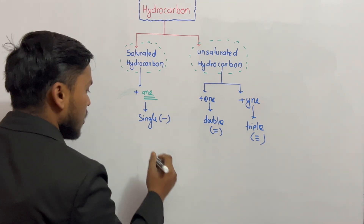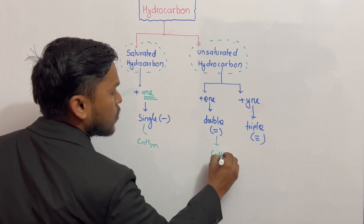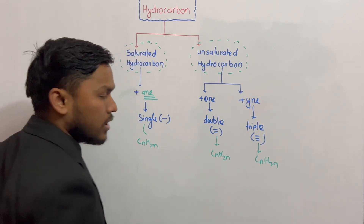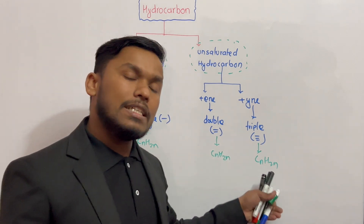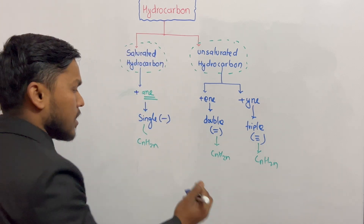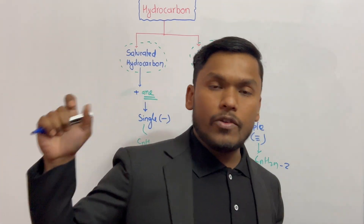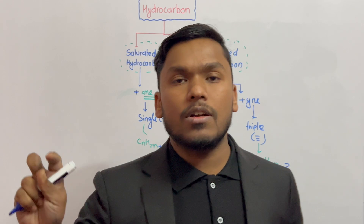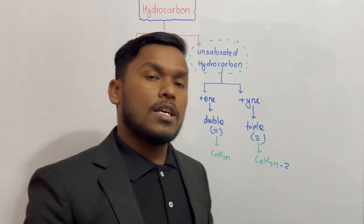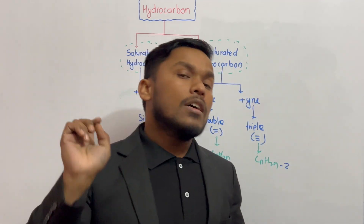The general formula — CnH2n+2 for saturated hydrocarbons (alkanes), CnH2n for alkenes, and CnH2n-2 for alkynes. So in this book the formula is CnH2n+2 and CnH2n-2. There are two types: saturated hydrocarbon and unsaturated hydrocarbon.